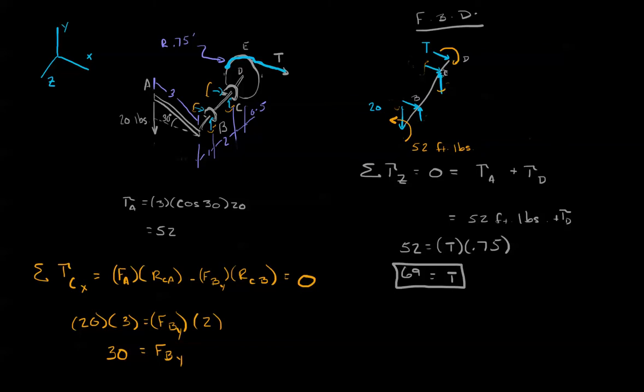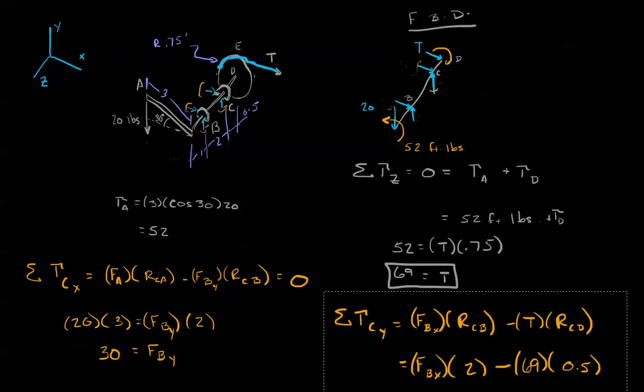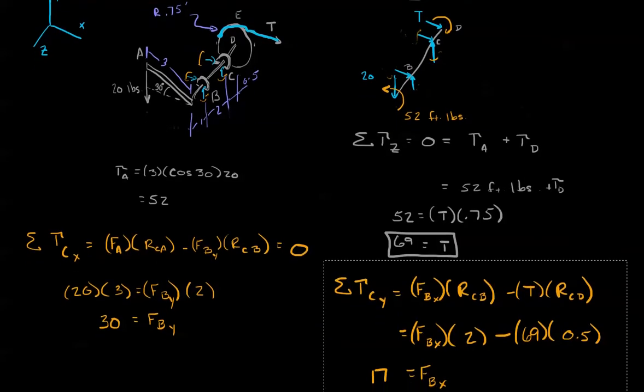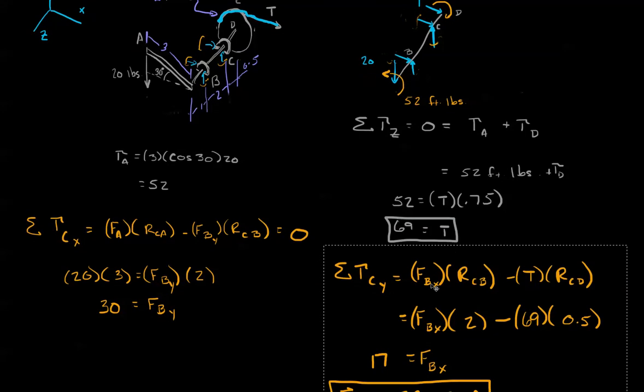Now, that said, let's sum the torques about C in the y direction so we can find the y component of the forces. All right, so here we go. The sum of torques about C in the y direction. That's going to be the force of B in the x direction times the radius of CB.